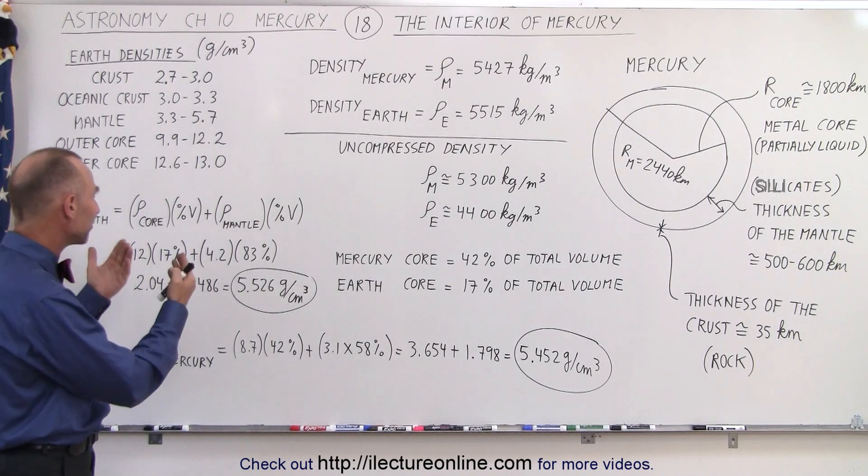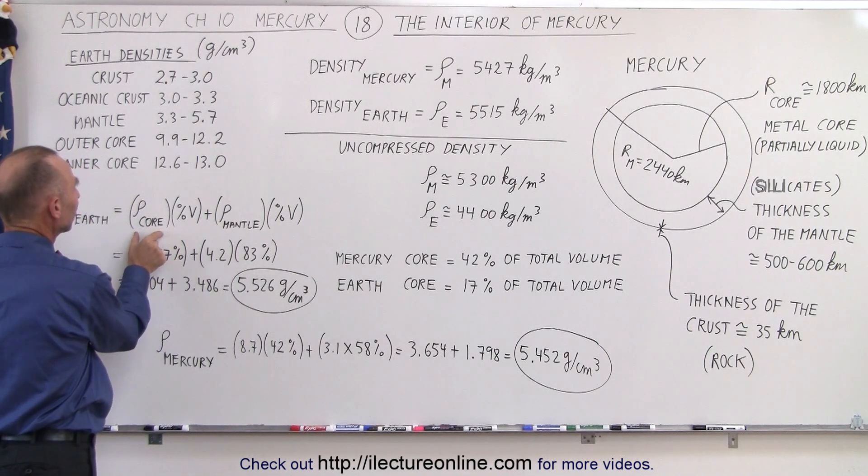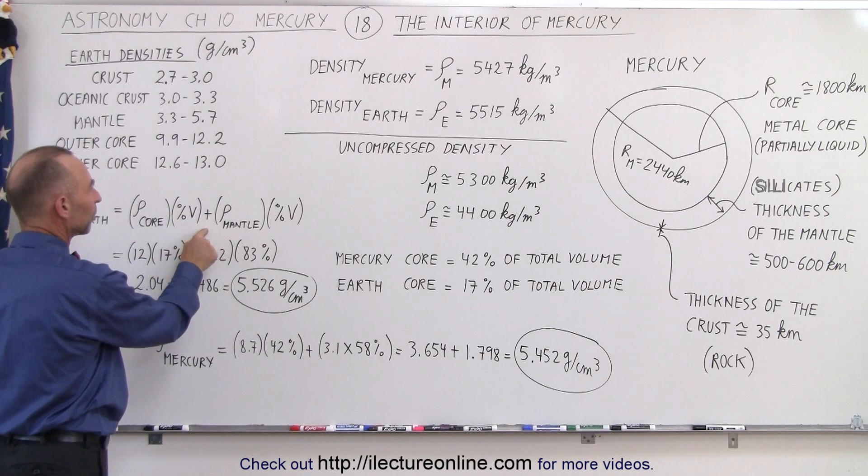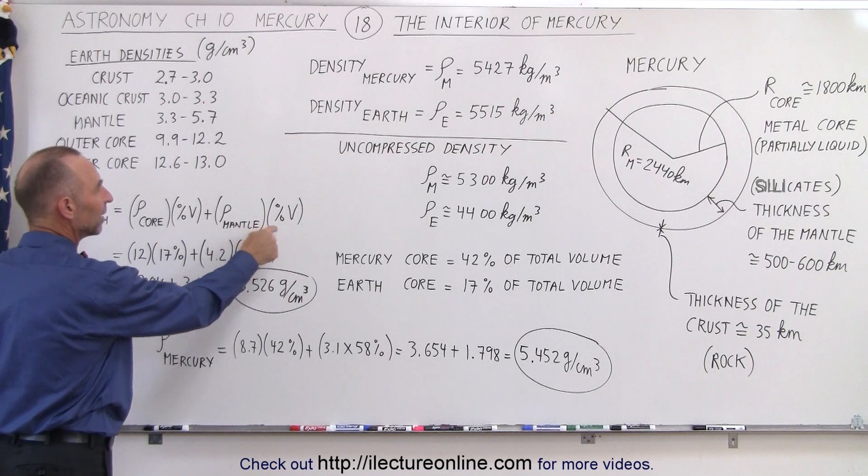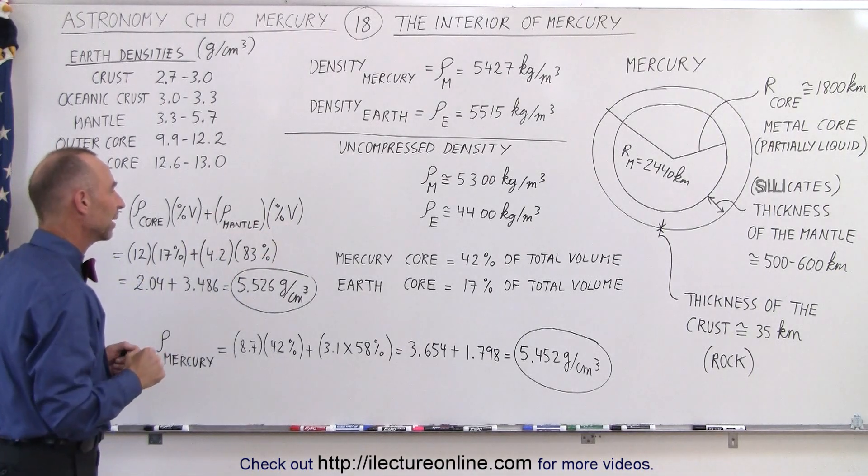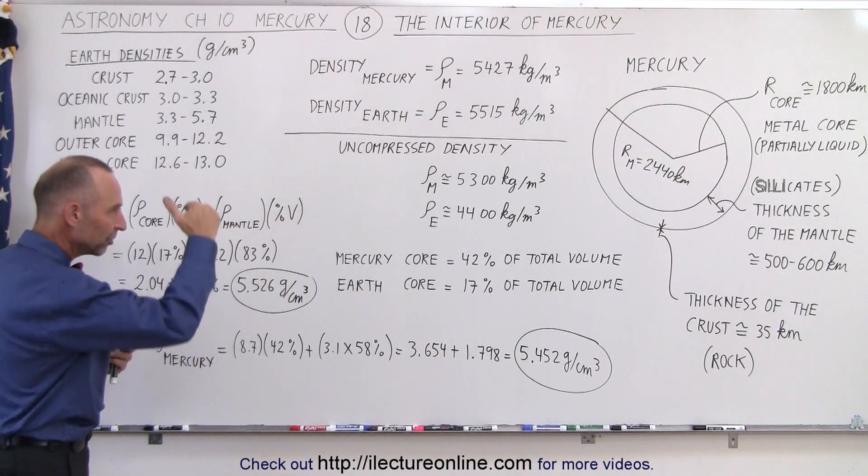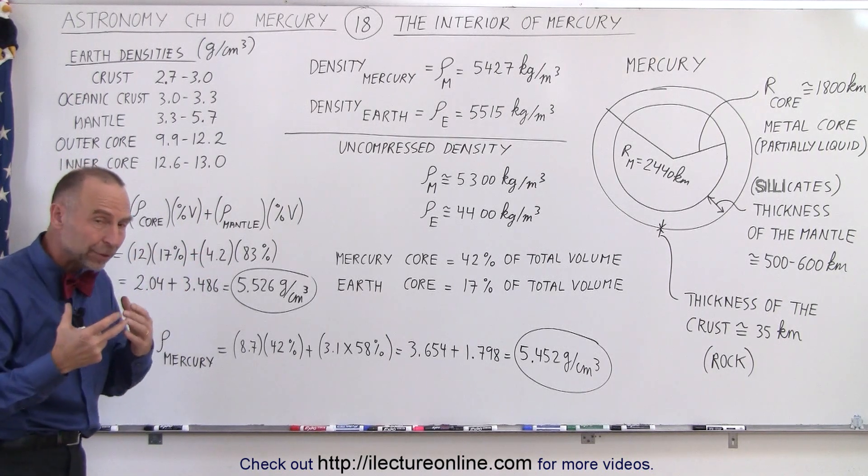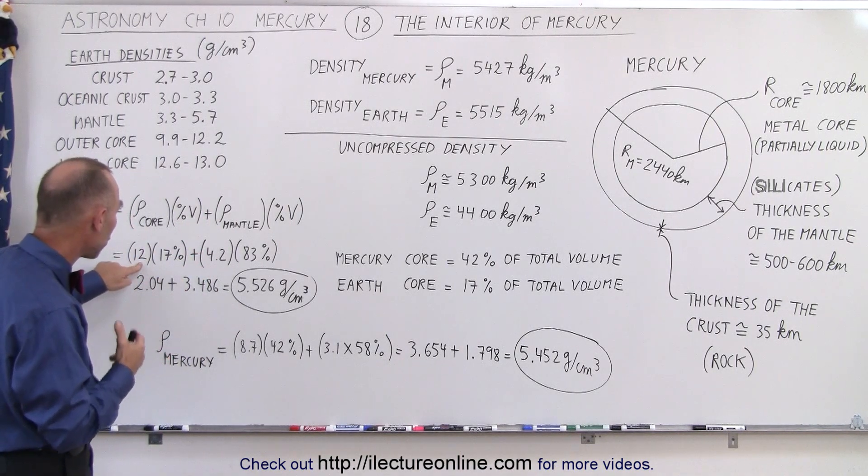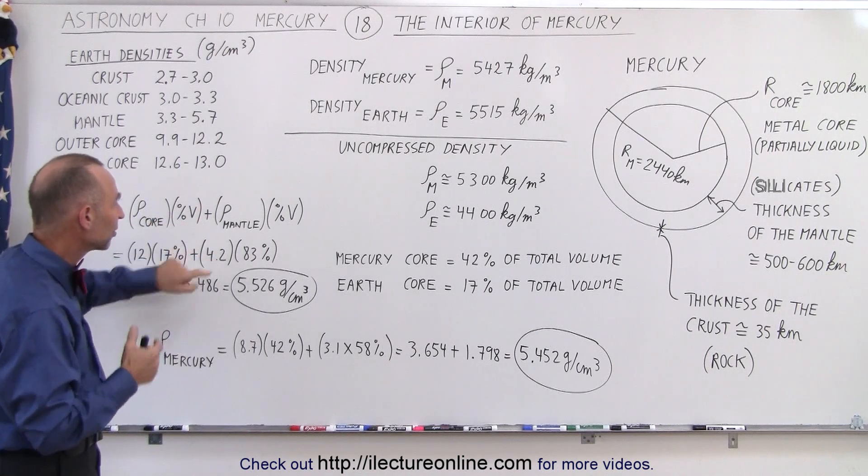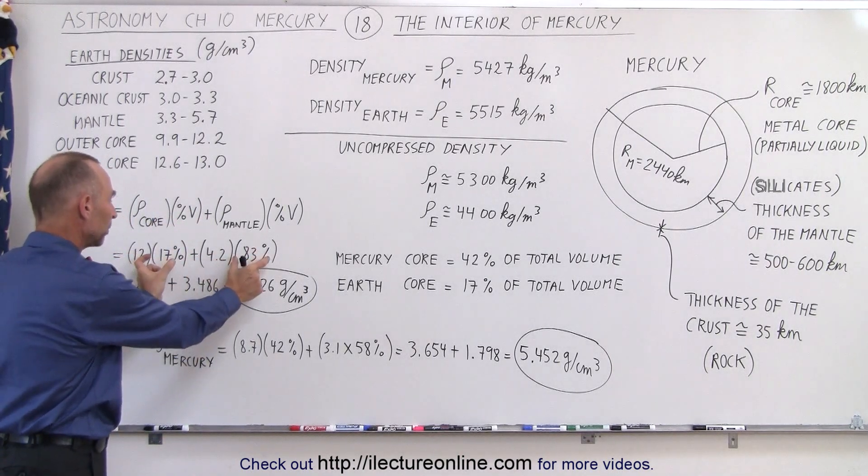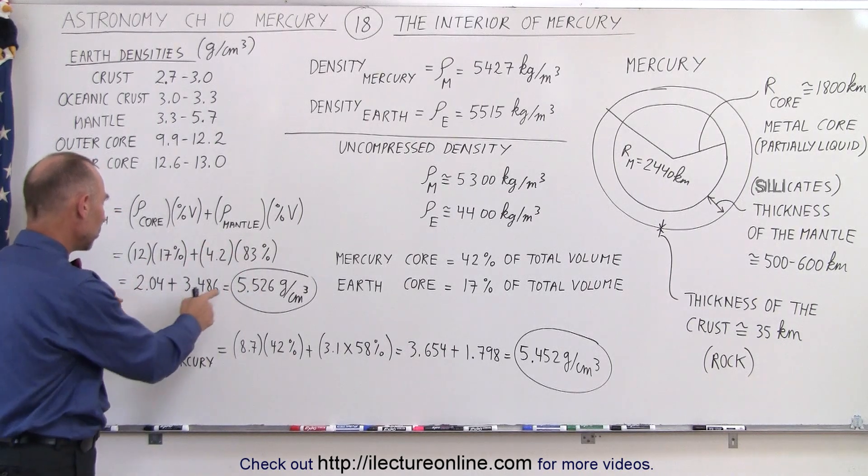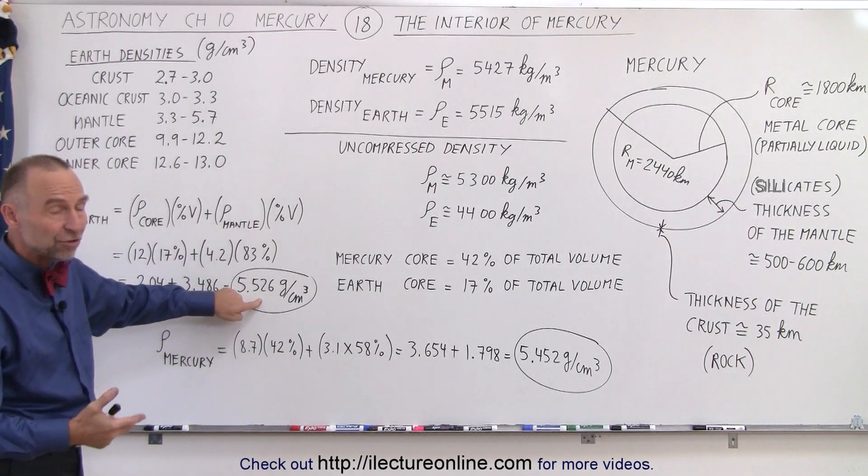Well, the way we do that is as follows: We take the density of the Earth and we derive that from taking the average density of the core times the percent of the volume of the core, plus the average density of the mantle times the percentage volume of the mantle. And based upon the depth that those boundaries are, we can pretty well come up with a typical average density of the core and the typical average density of the mantle. We multiply that times the percent volume of the total volume of the planet.